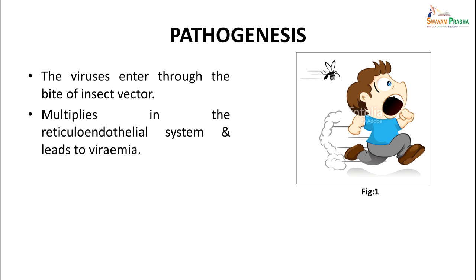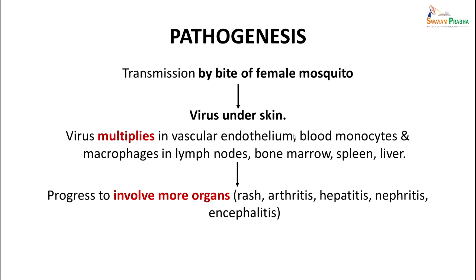As far as pathogenesis is concerned, viruses usually enter the body through an insect vector bite and then multiply in the reticuloendothelial system, leading to viremia. Transmission by the bite of the female mosquito leads to the virus multiplying in the vascular endothelium, blood monocytes, macrophages in lymph nodes, bone marrow, spleen, liver, etc. This progresses to involve more organs, finally leading to rash, arthritis, hepatitis, nephritis, or encephalitis.